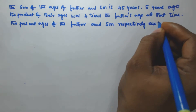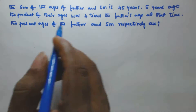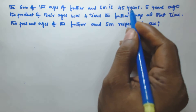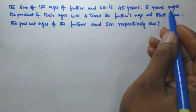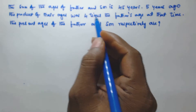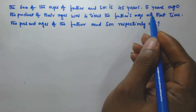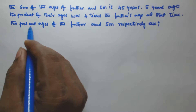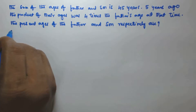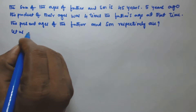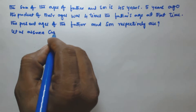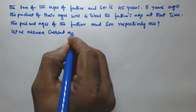So it is given that the sum of the ages of father and son is 45 years. Five years ago, the product of their ages was four times the father's age at that time. Now we have to find the present ages of the father and son.